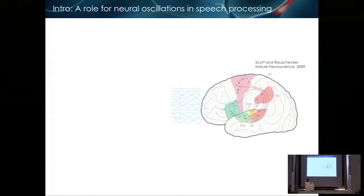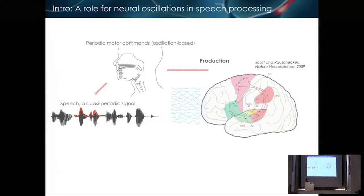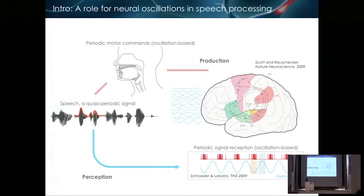Okay, so speech is a special biological signal because it's a signal produced by our own brain. It's produced by our motor system, by the periodicity of the motor system, by the turbulences that are going on in the vocal apparatus. And this results in a quasi-periodic signal.